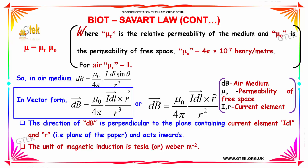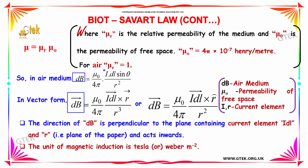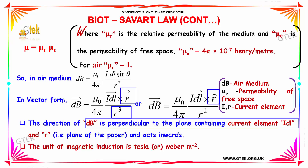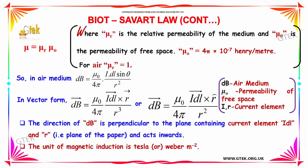This can be represented in vector form, giving a direction. dB can be written as the vector dB, and I dL can be written as the vector I dL. Substituting R² and replacing sinθ with R̂ — or, using R vector divided by R, R² becomes R³. The direction of dB is perpendicular to the plane containing the current element I dL and R, and acts inwards. The unit of magnetic induction dB is Tesla or Weber per meter square.